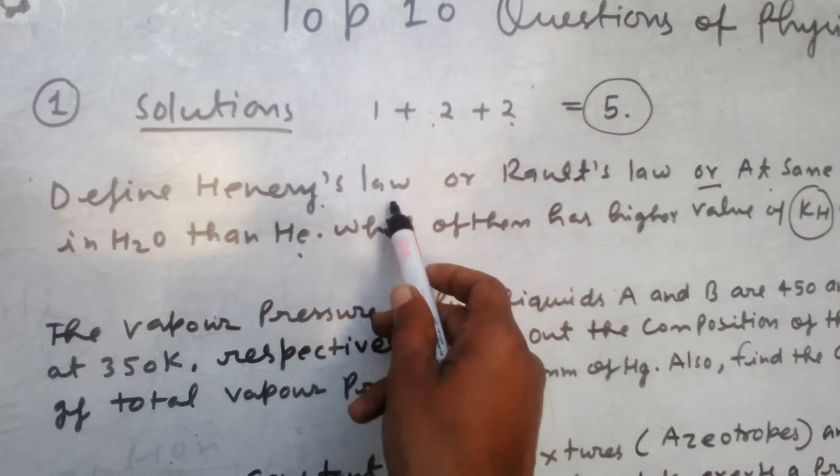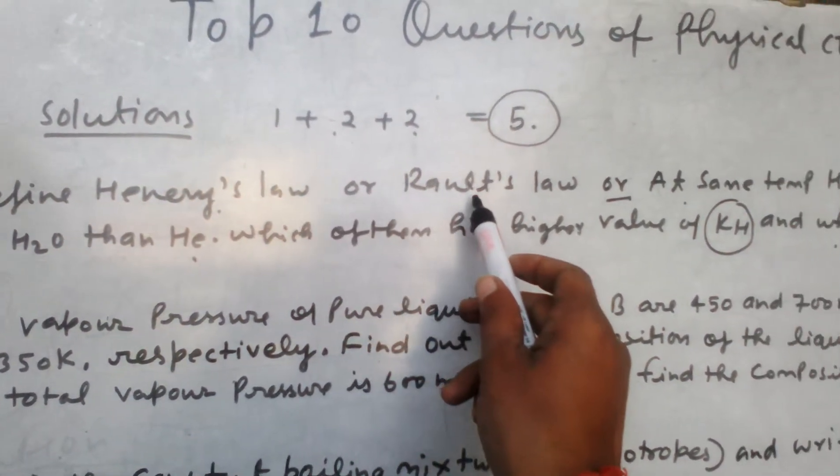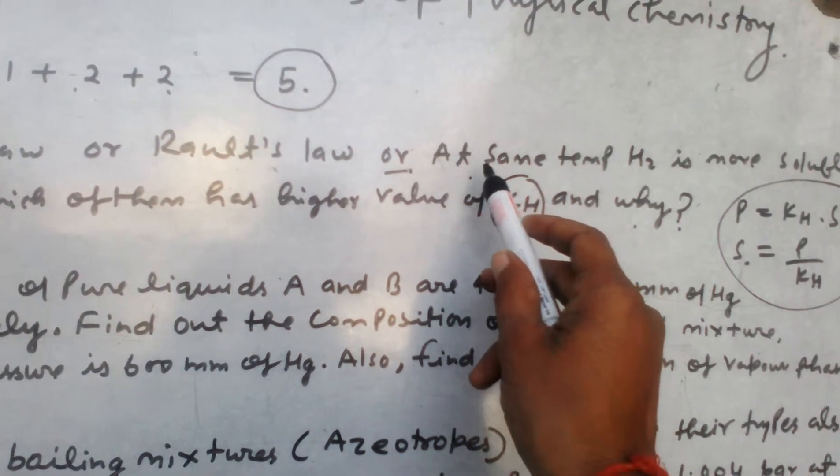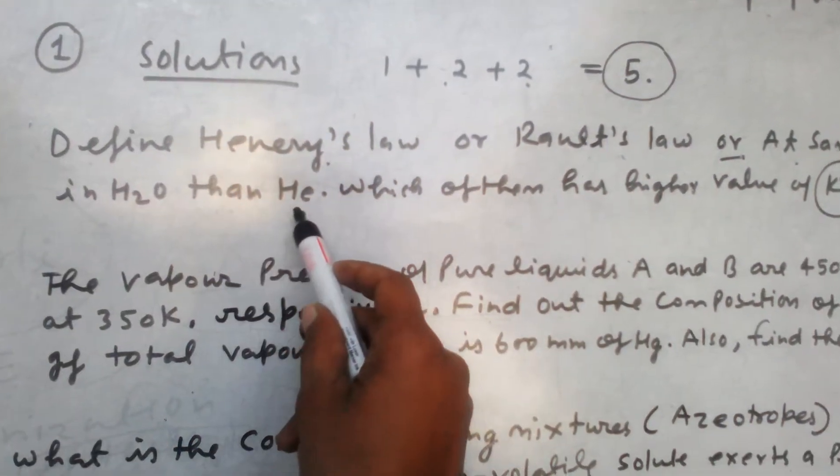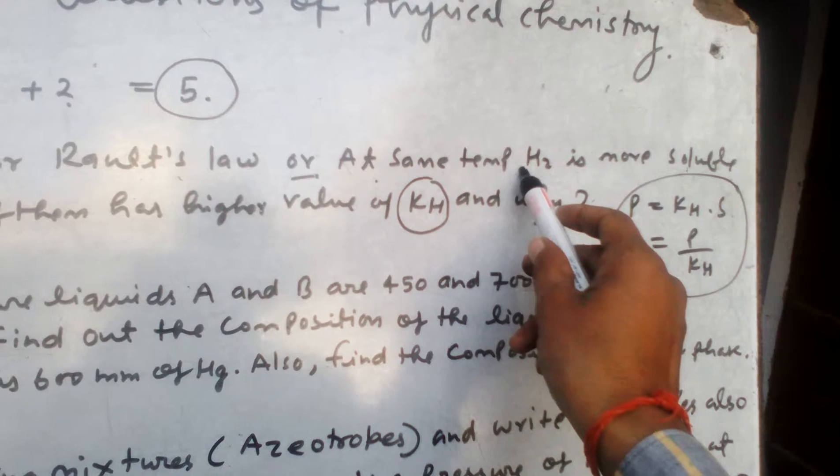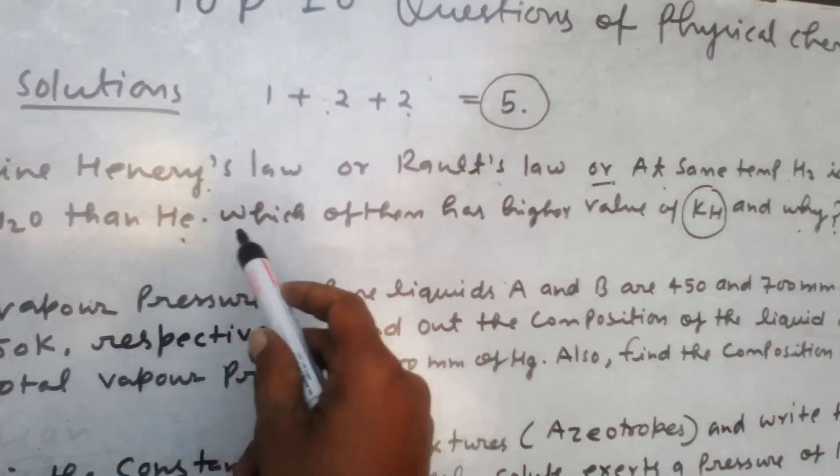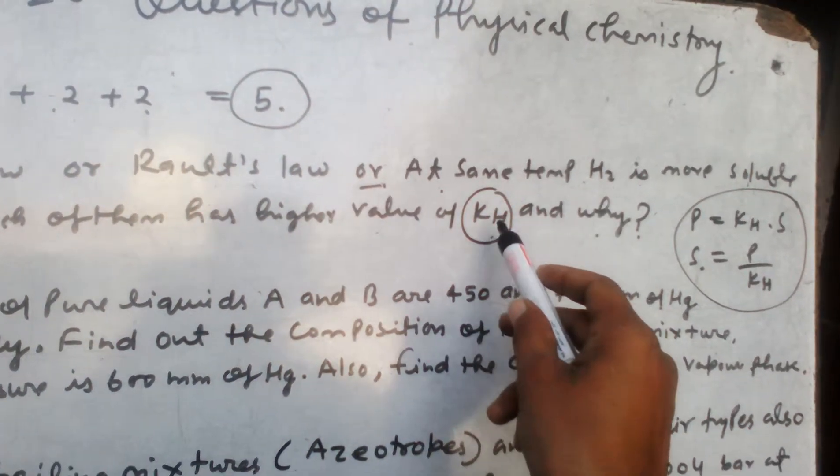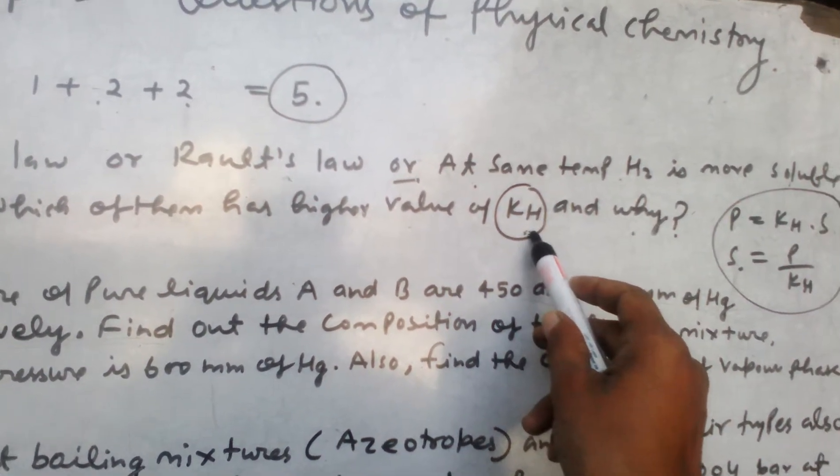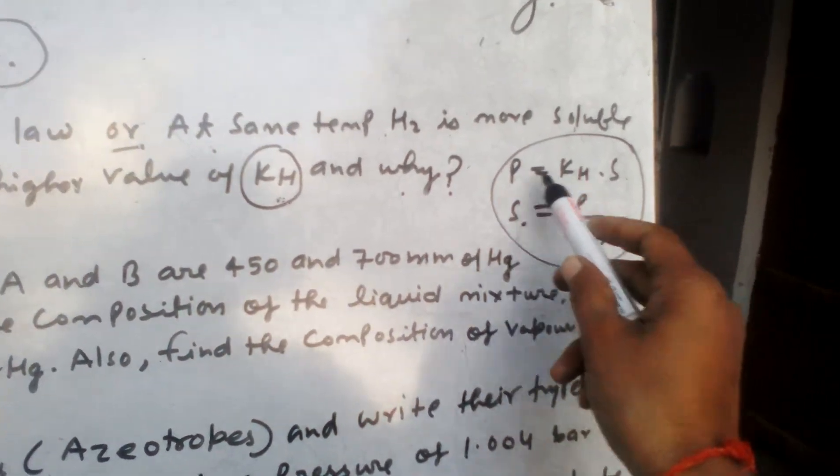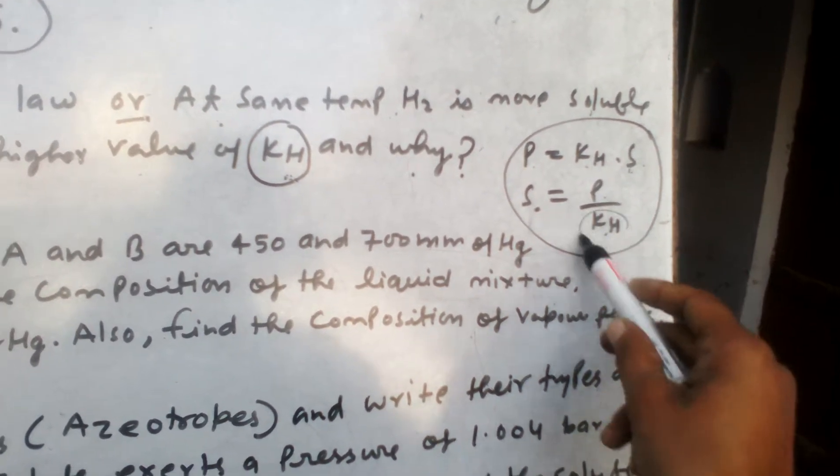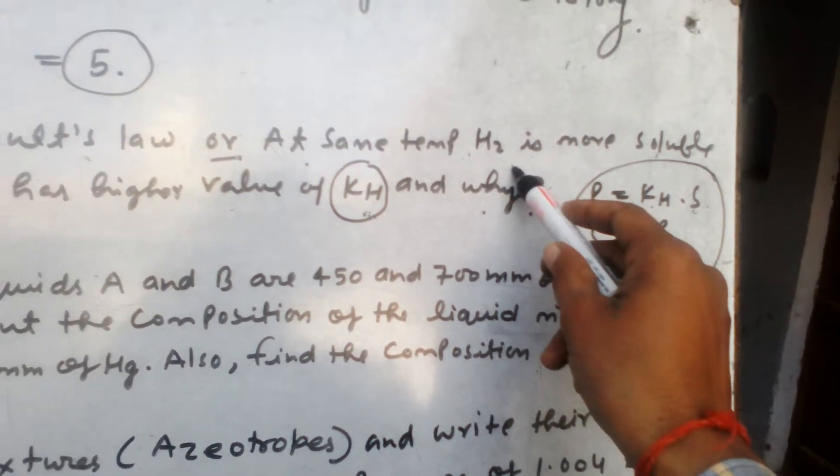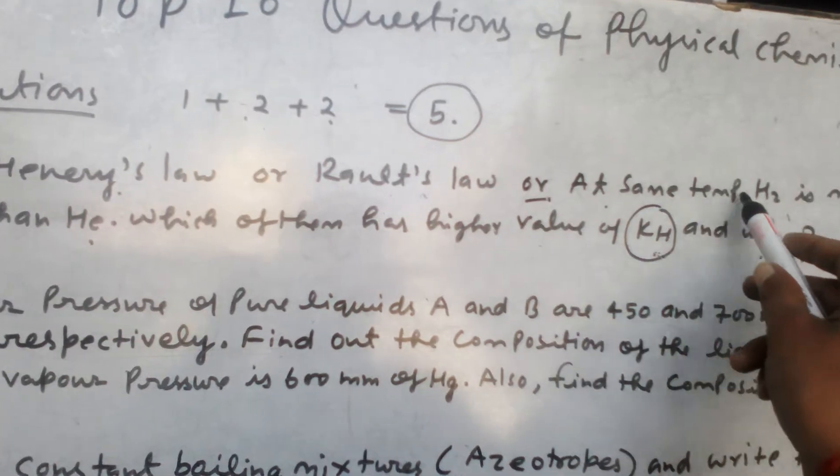The first question for one mark is define Henry's Law or Raoult's Law and its application. At the same temperature, hydrogen gas is more soluble than helium. The question is, which of them has higher value of KH? As you have studied Henry's Law, solubility equals pressure upon KH. So if KH is less, then the solubility will be higher. Since hydrogen is more soluble than helium, helium will have higher KH. This is a very important question.